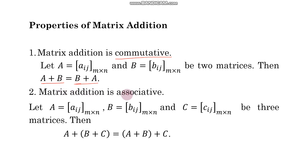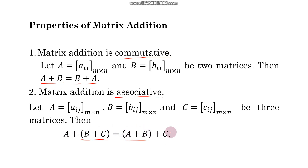Second, matrix addition is associative. If three matrices A, B, C are of the same order, then A plus (B plus C) — where we first add B and C, then add the result to A — equals (A plus B) plus C, where we first add A and B then add C. This is the associative law, and matrix addition satisfies it.